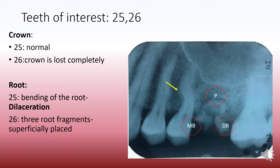In case of 2-6 we see that there are three root fragments. All maxillary first molars have three roots and we can distinctly differentiate the mesiobuccal from the distobuccal and the palatal root. The palatal root is relatively embedded in the bone whereas the mesiobuccal and the distobuccal roots are superficially placed.